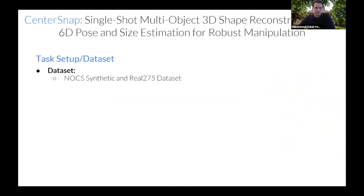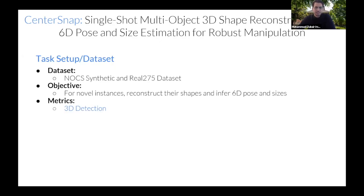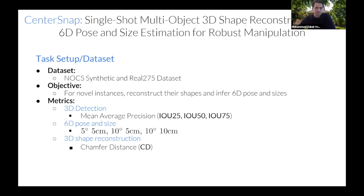We use the NOX synthetic and real dataset, where NOX synthetic is much larger — around 100 times larger, using 275,000 examples versus a couple of thousand examples for real-world fine-tuning. The goal is to reconstruct 3D shapes, perform 3D detection, and do 6D pose and size estimation. We measure 3D detection performance using IOU metrics (percentage of bounding box overlap), measure 6D pose accuracy using X-degrees N-centimeter overlap thresholds, and use chamfer distance for shape reconstruction.